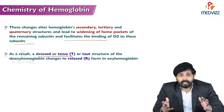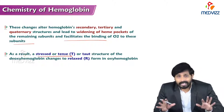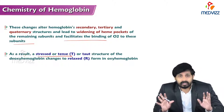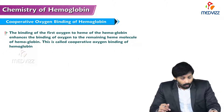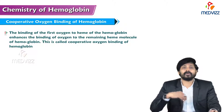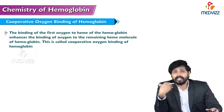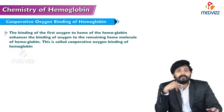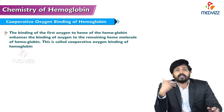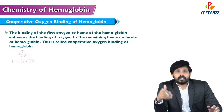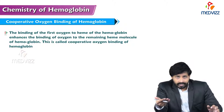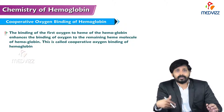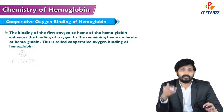As a result, the stressed T form of deoxyhemoglobin is converted to the relaxed form of oxyhemoglobin. The concept of cooperative oxygen binding of hemoglobin will be discussed in the next slide.